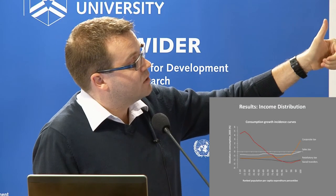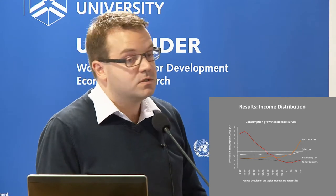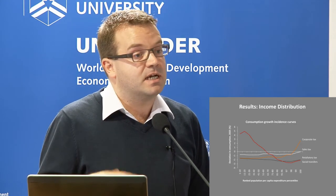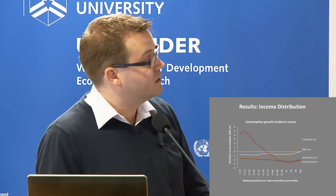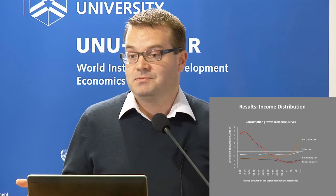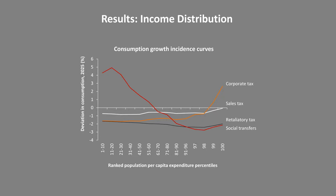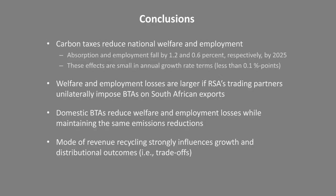Conversely, if we switch to a social transfers program — using revenues to expand existing social transfer programs — the benefits fall disproportionately on lower income households, and higher income households are worse off relative to other scenarios. Most interesting is the scenario where the rest of the world imposes a tax on South African exports but South Africa doesn't introduce its own tax. That is almost the worst-case scenario for every single household group, because there are no taxes collected by South Africa that could be recycled. One of the advantages of being a first mover and implementing the carbon tax itself is that South Africa collects the revenues and gets to decide how they're distributed, which would minimize welfare losses.